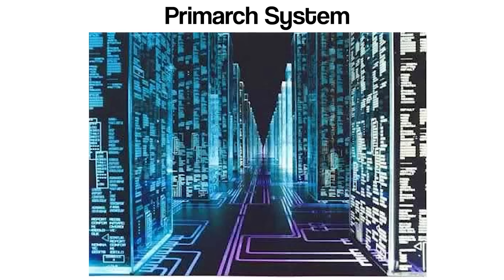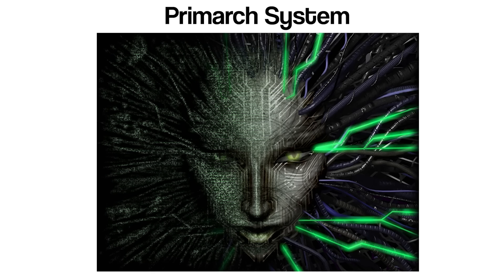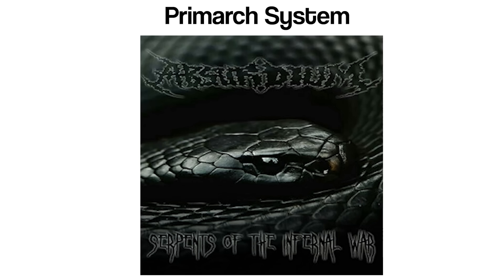Others take a more conspiratorial approach, suggesting that the Primarch system houses black box programs created decades ago, possibly by governments or shadow organizations that now act independently, executing functions unknown even to their original designers. These may include monitoring global behavior patterns, influencing high-level decision-making processes through data manipulation, or preserving knowledge deemed too powerful or dangerous for public access. Access to this system is often said to require synchronization with ultra-secure cryptographic keys that do not exist on any known server or network. In some versions of the theory, the Primarch system itself determines who may enter, choosing candidates based on behavior, algorithmic compatibility, or even genetic factors. Despite its fantastical nature, the idea of the Primarch system reflects deeper questions about digital autonomy, system control, and the possibility of technology evolving beyond its creators.